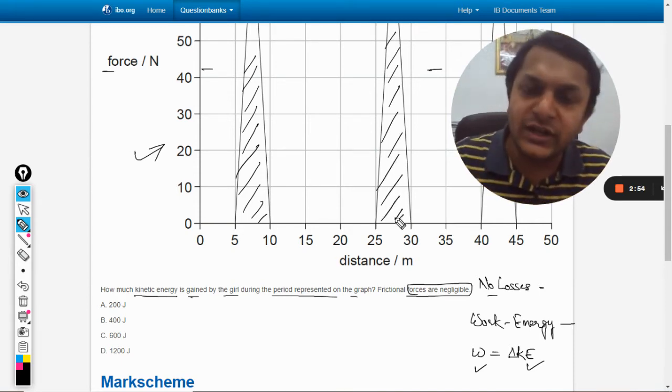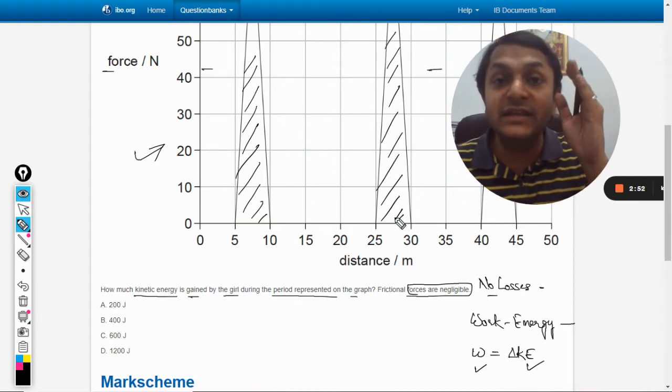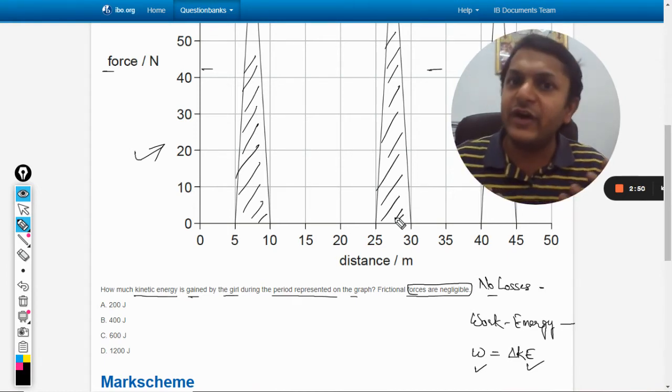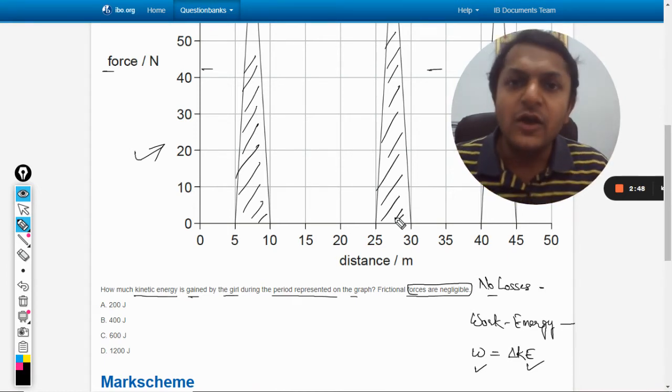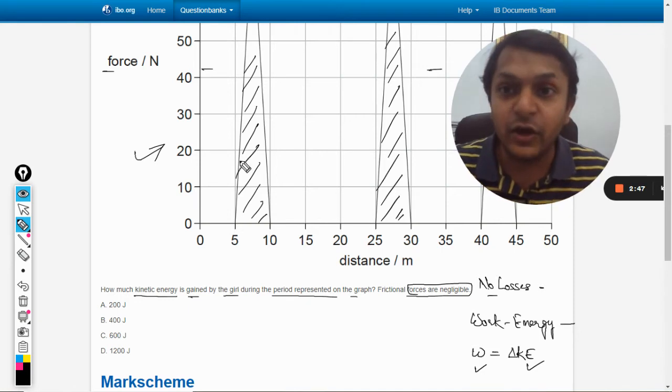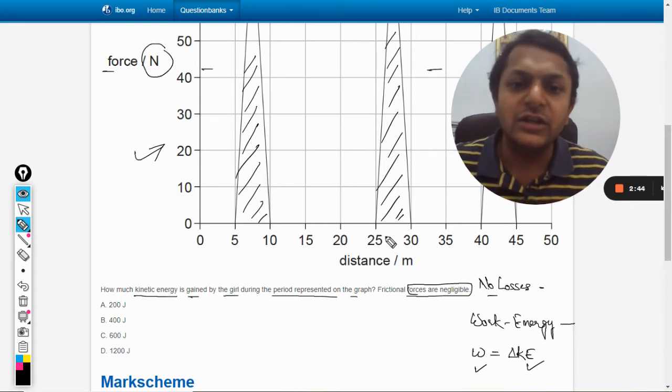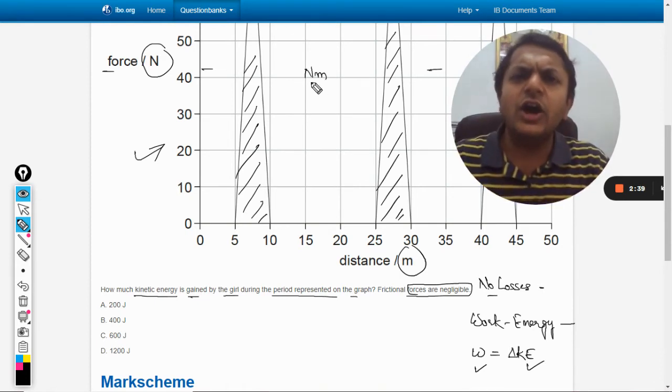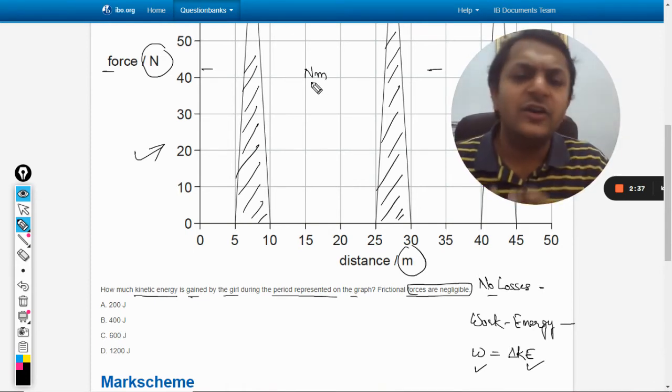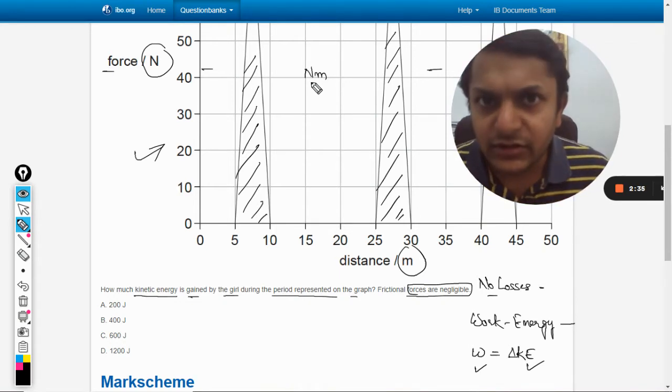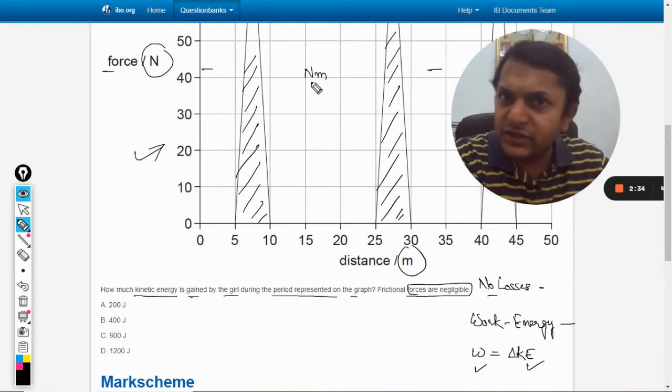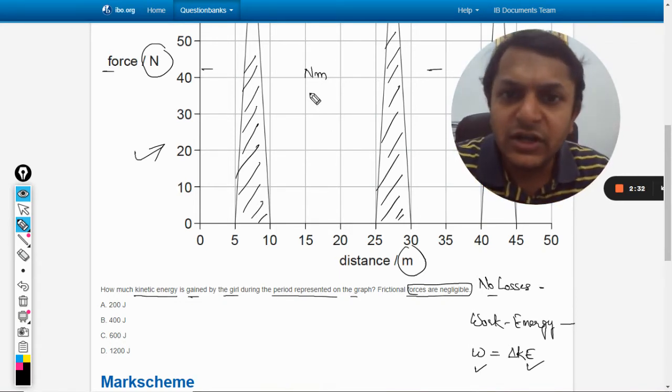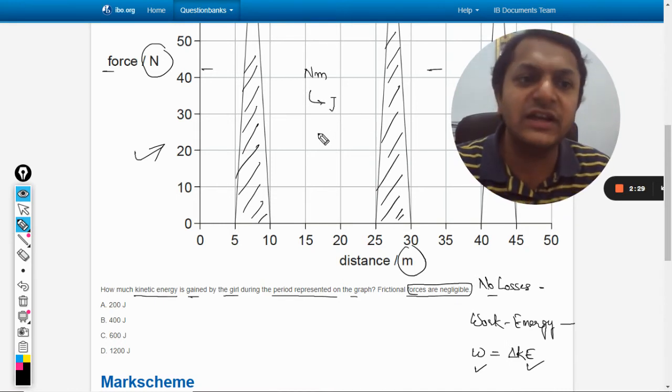How do we find which physical quantity is represented by the area under the curve? We have to find the SI unit of the area. The area will be Newton multiply by meter. So the area is Newton meter. What is Newton meter? Newton meter is basically Joule.